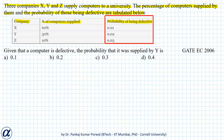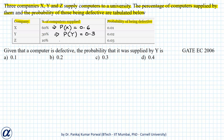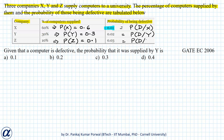From this table, I can write that the probability that X supplies the computer is 0.6, the probability that Y supplies the computer is 0.3, and the probability that Z supplies the computer is 0.1. The defect probabilities in the column represent: probability that the computer is defective given it is supplied by X, probability of being defective given supplied by Y, and probability of being defective given supplied by Z.